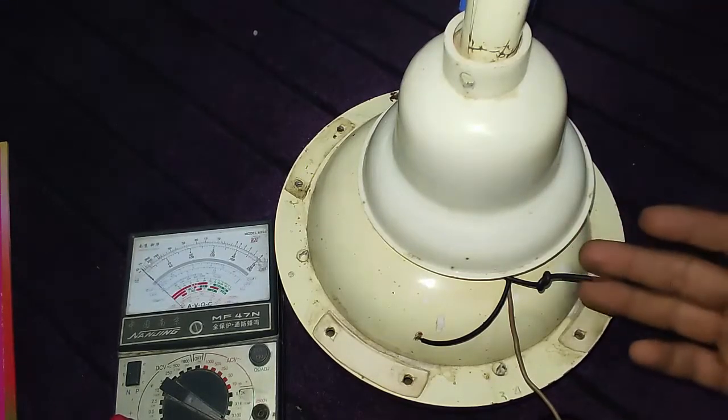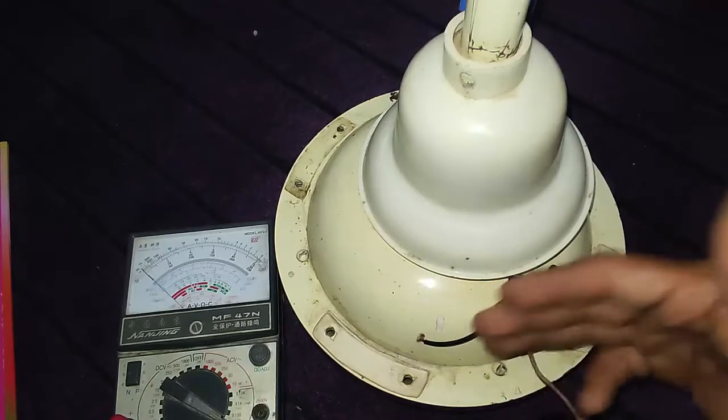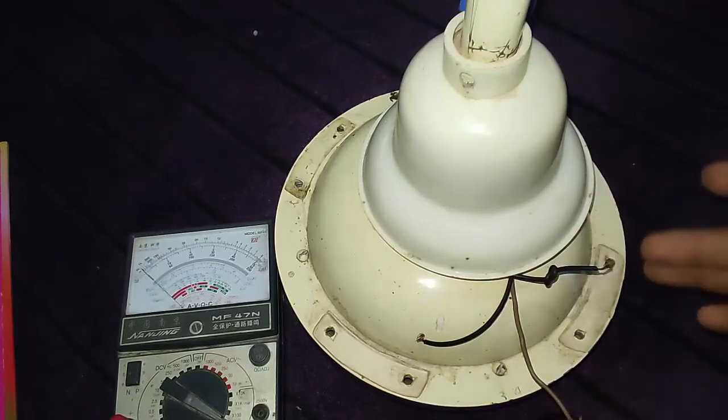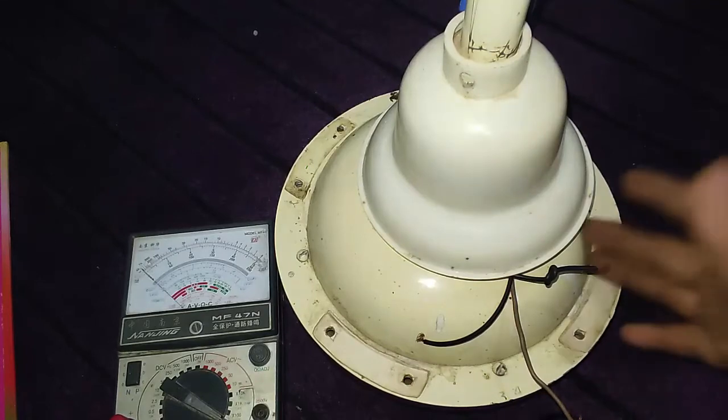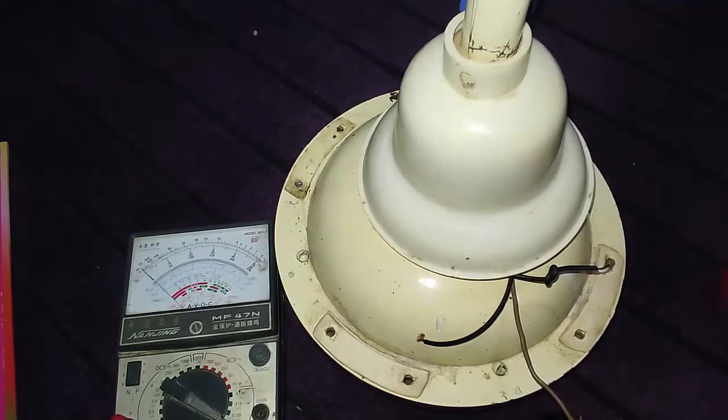As I already told you in my last video, the two wires which have high resistance will be start and run. First of all, I need to find out the common wire. This will be simple: if I find out that two wires have high resistance with one another, the third will be common.